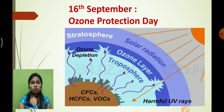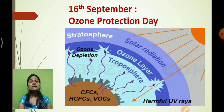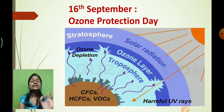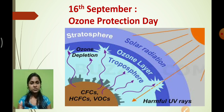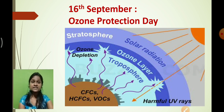To make people aware about the importance of the ozone layer, each year on 16th September we celebrate worldwide as the ozone protection day. So 16th September is celebrated as the ozone protection day, just to make people aware of the importance of the ozone layer. Why is the ozone layer so important? Because it protects us from ultraviolet rays and protects life on earth.